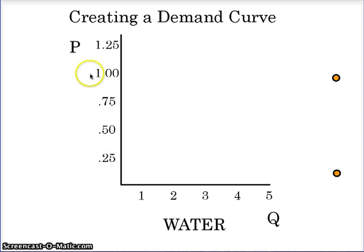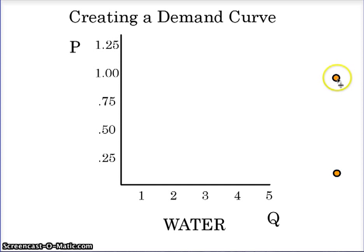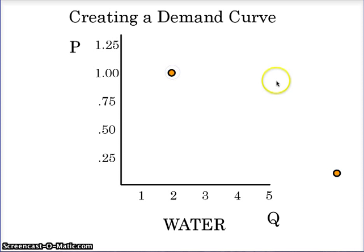The first thing I want to do is take that information and look at the demand curve for water. We saw that when water was a dollar, we bought two items. So what we want to do is draw a plot point at that location. When water was a dollar, we bought two bottles — hence, we have a plot point. One point is not enough to make a demand curve yet.